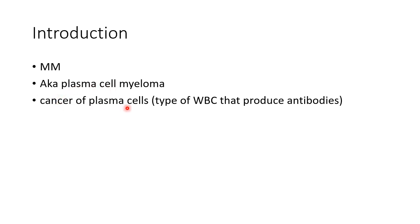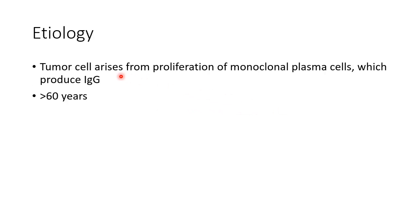Plasma cells are a type of white blood cells that produce antibodies. Now let us see about the etiology of multiple myeloma. In multiple myeloma, the tumor cell arises from proliferation of monoclonal plasma cells which produce immunoglobulin G. It is most common in people over the age of 60 years.